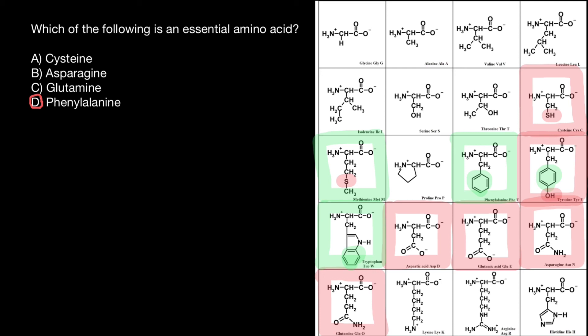Those being aromatic because it contains alcohol group here. So, phenylalanine is essential. Tyrosine is not essential. And tryptophan is essential.